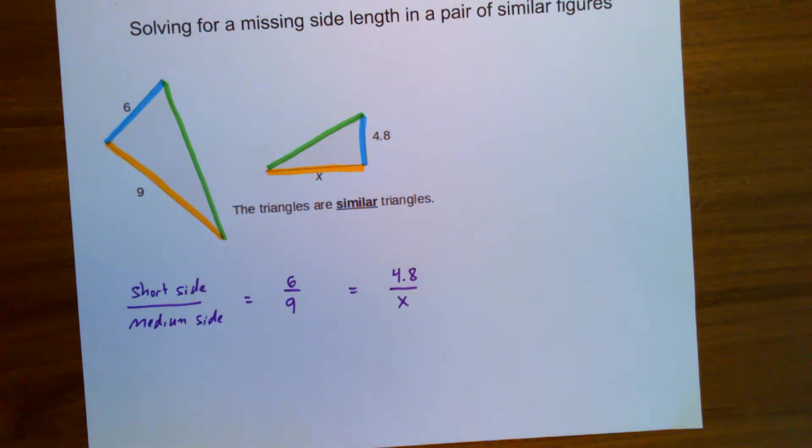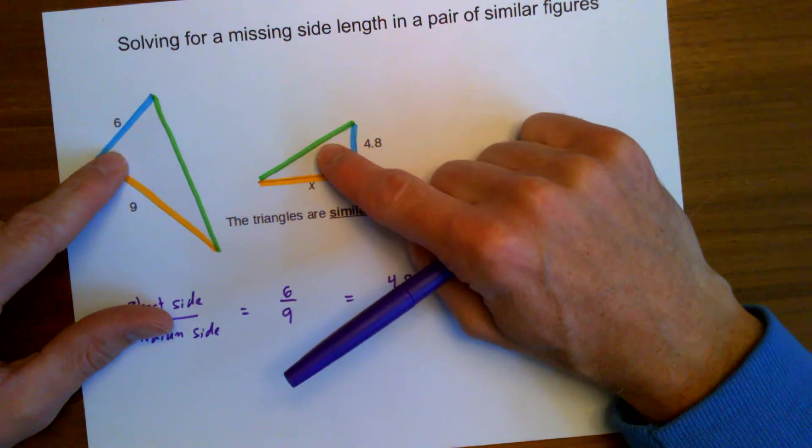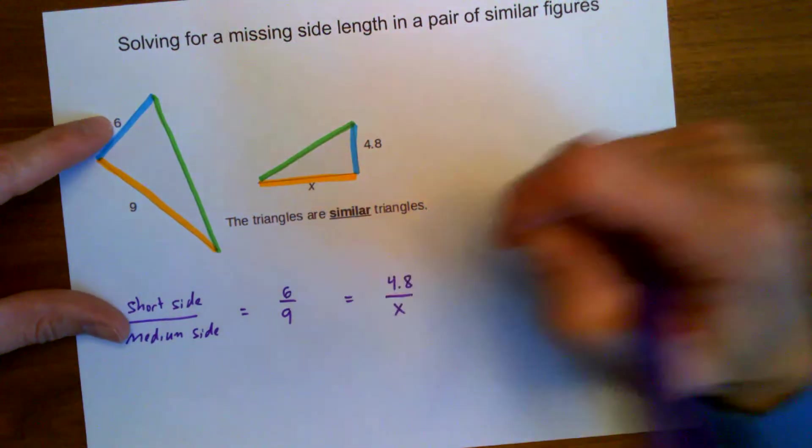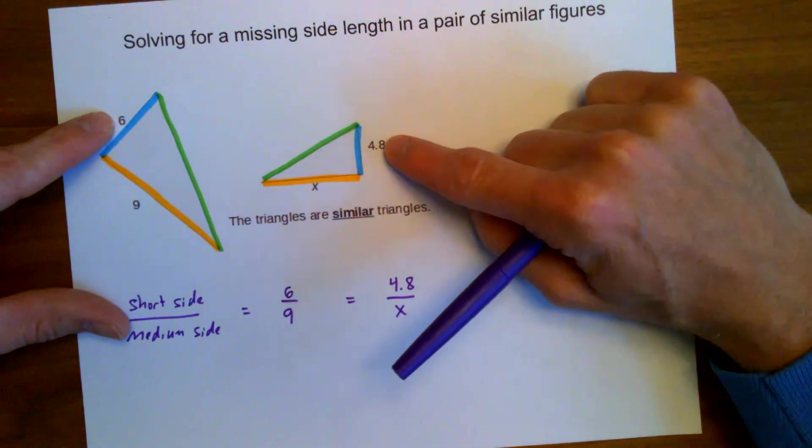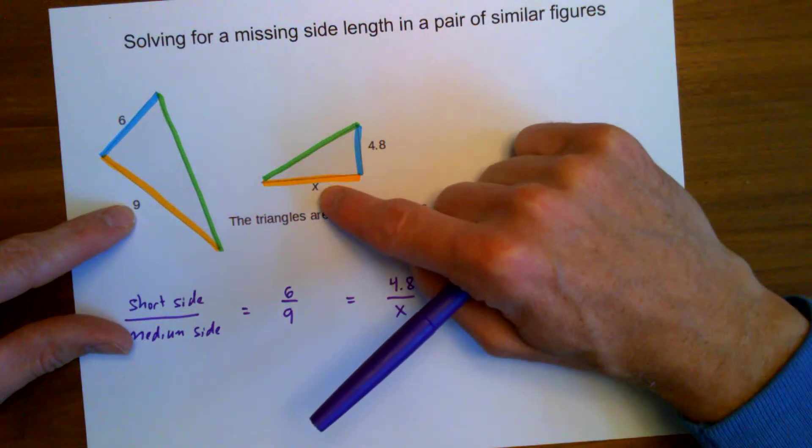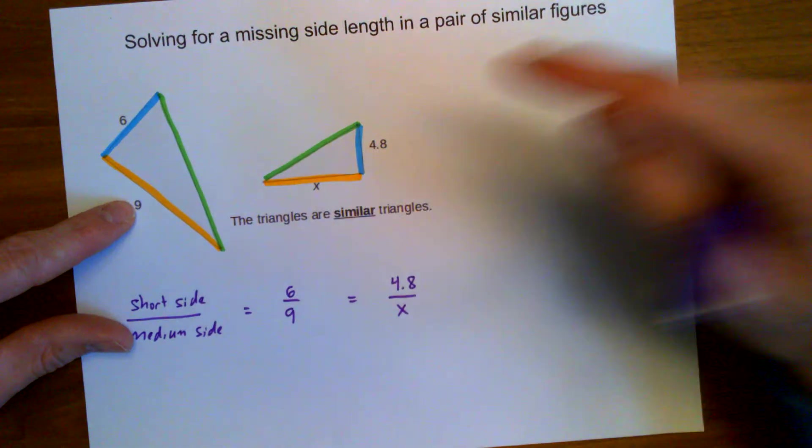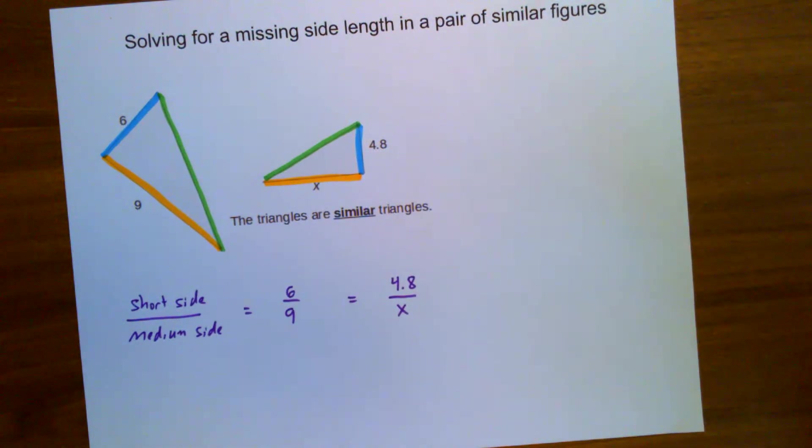The method I'm going to use is I'm going to figure out what is the scale factor that takes me from this one to this one. I know that this triangle is smaller. This blue side shrunk from 6 to 4.8, so the 9 must shrink from 9 down to something else. It's going to be less than 9, but it's got to be more than 4.8. I'm just kind of thinking through this one a little bit.